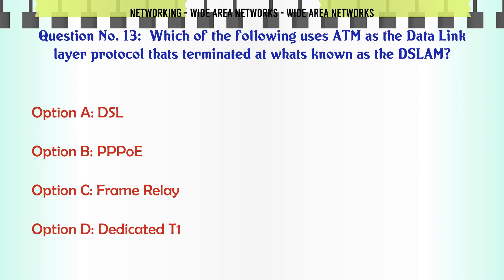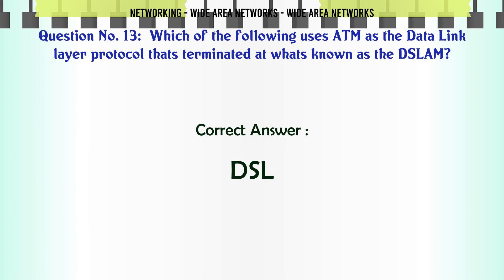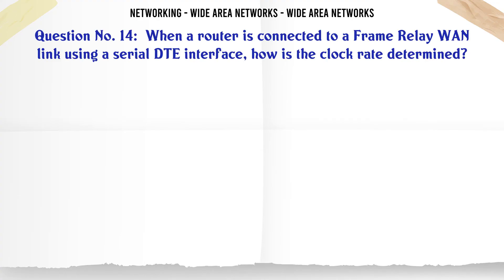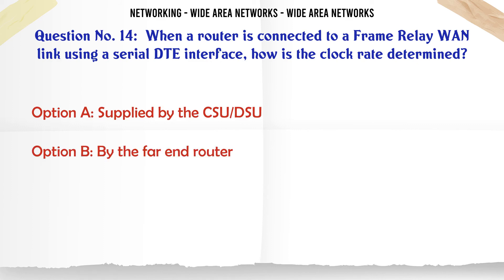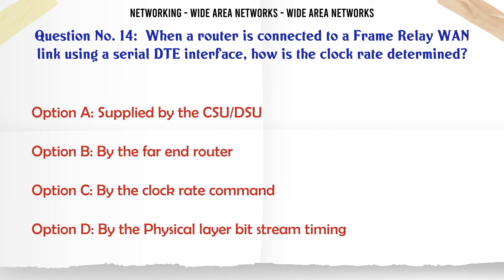Which of the following uses ATM as the data link layer protocol, terminated at what's known as the DSLAM? A. DSL. B. PPP. C. Frame Relay. D. Dedicated T1. The correct answer is A: DSL.